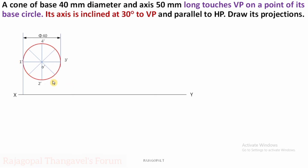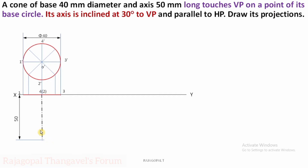Extend the projectors from each and every division to fix the top view. The axis length is 50 mm — draw an axis for 50 mm and complete a triangle in the top view. This is the simple position of the cone.